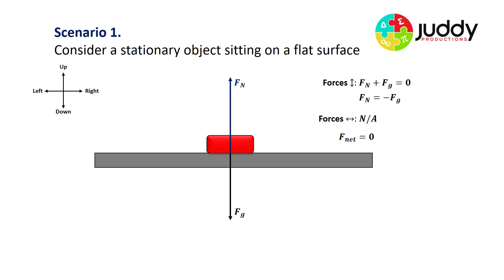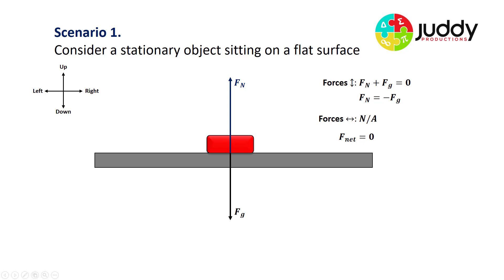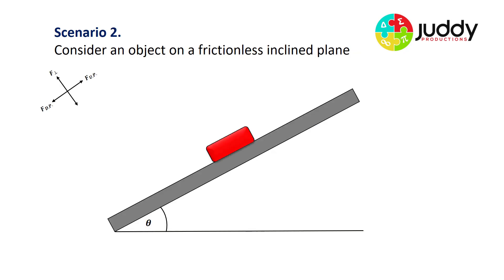We can improve the expressions by replacing Fg with the equation mg, which is how you calculate the gravitational force. So we can update these equations with mg. Now let's consider our inclined plane.